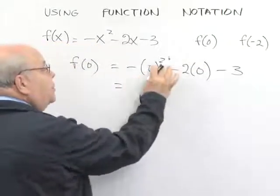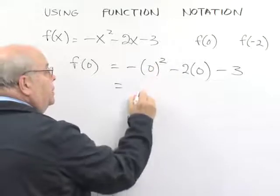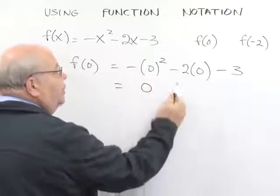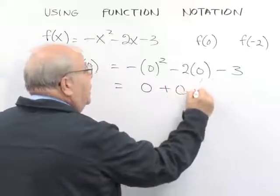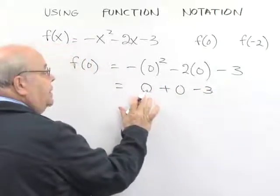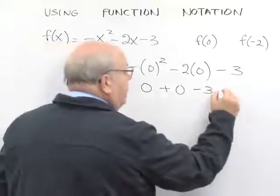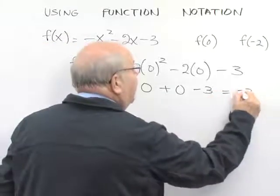Now, we know that 0 squared is 0, minus 0 is the same as plus 0. We know that negative 2 times 0 is also 0. So, all we have to do is add 0 plus 0 plus minus 3, and that would give us negative 3.